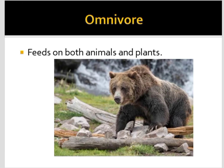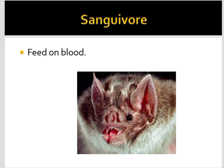Next, sanguivorous feeding — organisms which feed on blood are called sanguivores. Vampires and similar animals come under this type; they feed on blood.